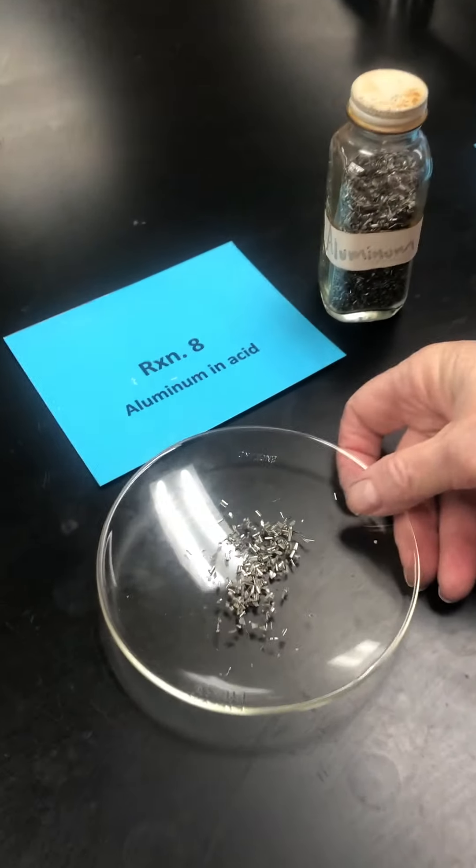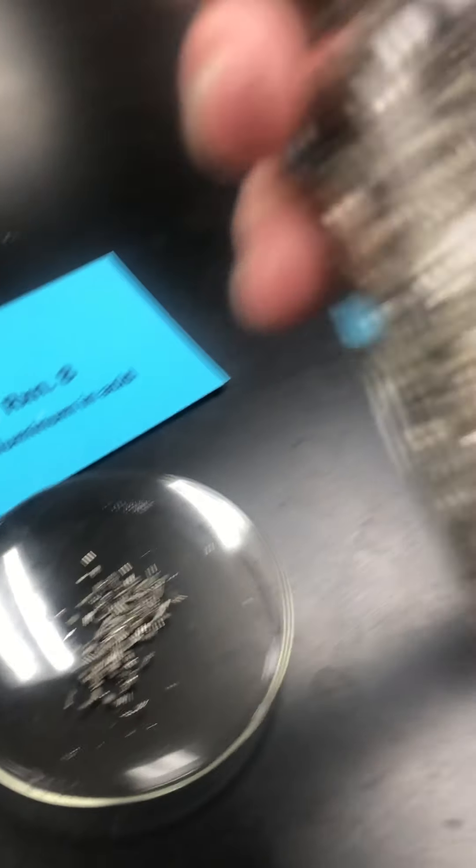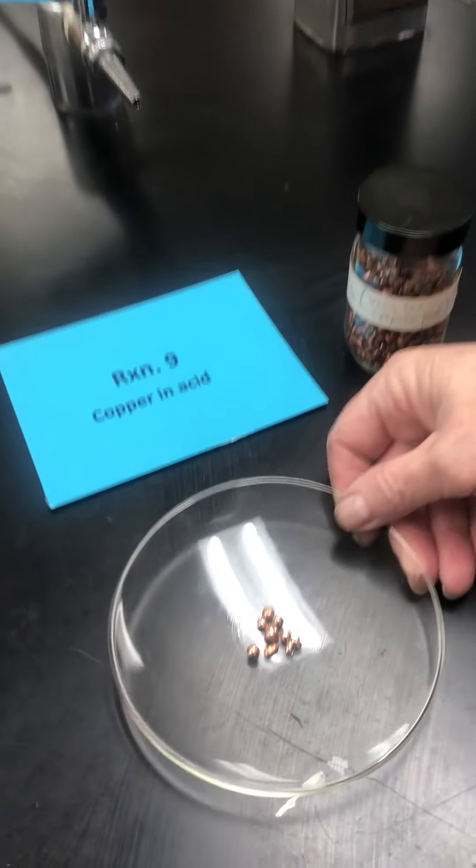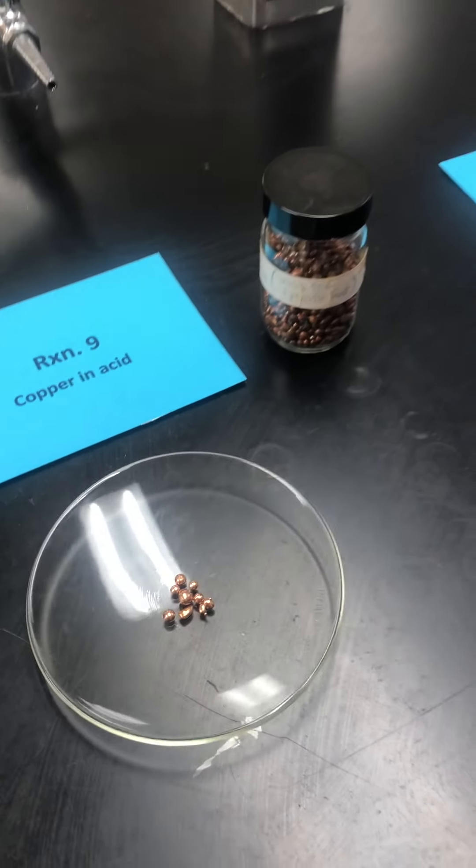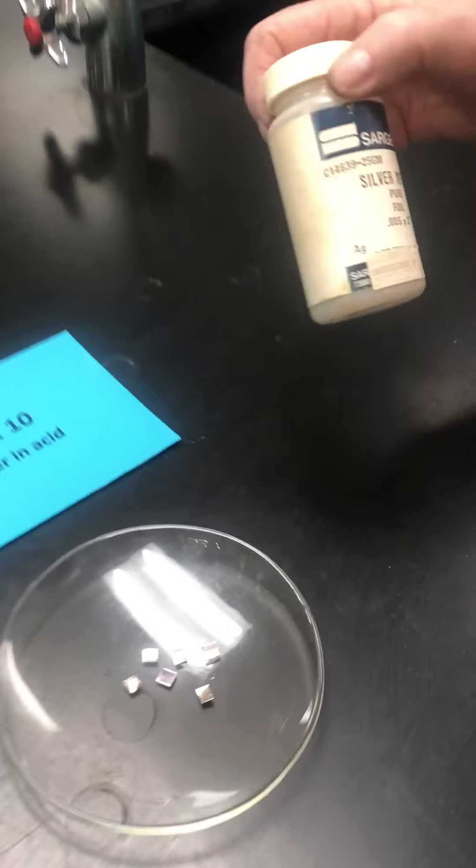Here number eight is aluminum. I have aluminum filings into which I'm going to pour hydrochloric acid. Here I have some beautiful copper that I'll add hydrochloric acid to, and here I have silver.